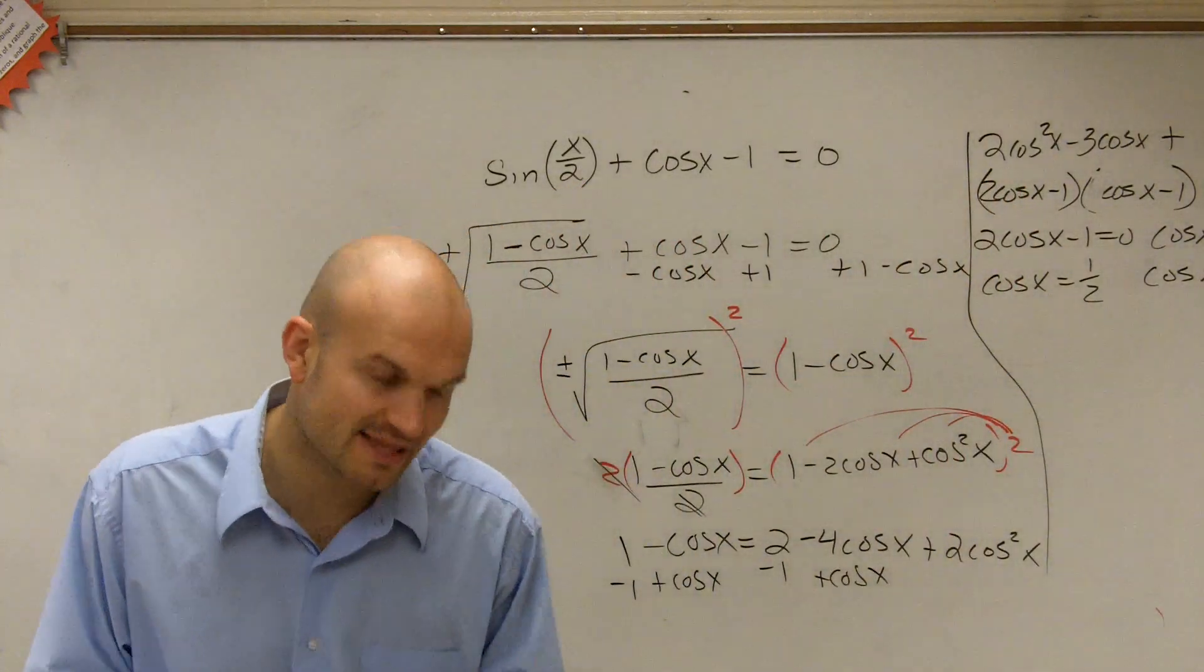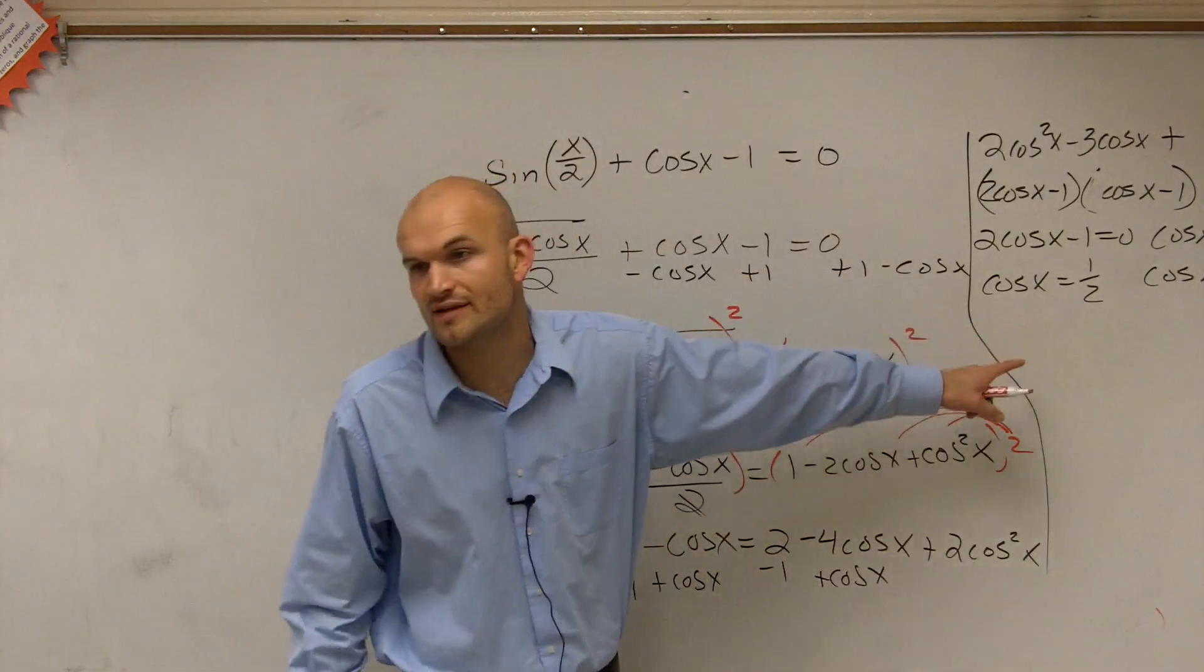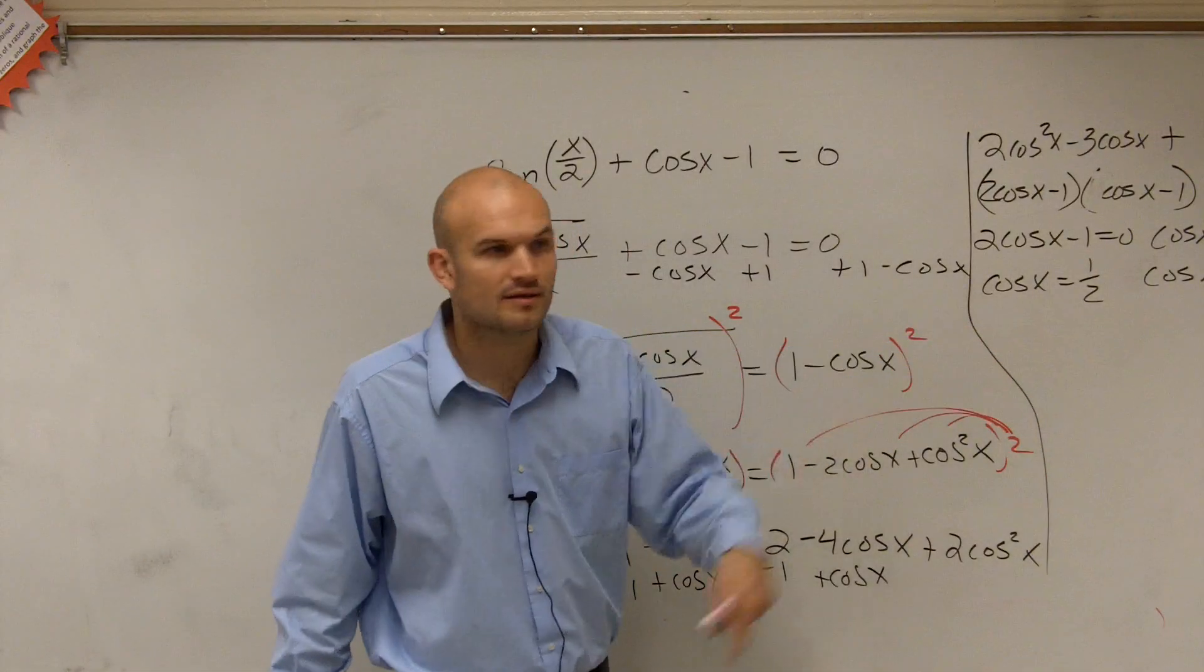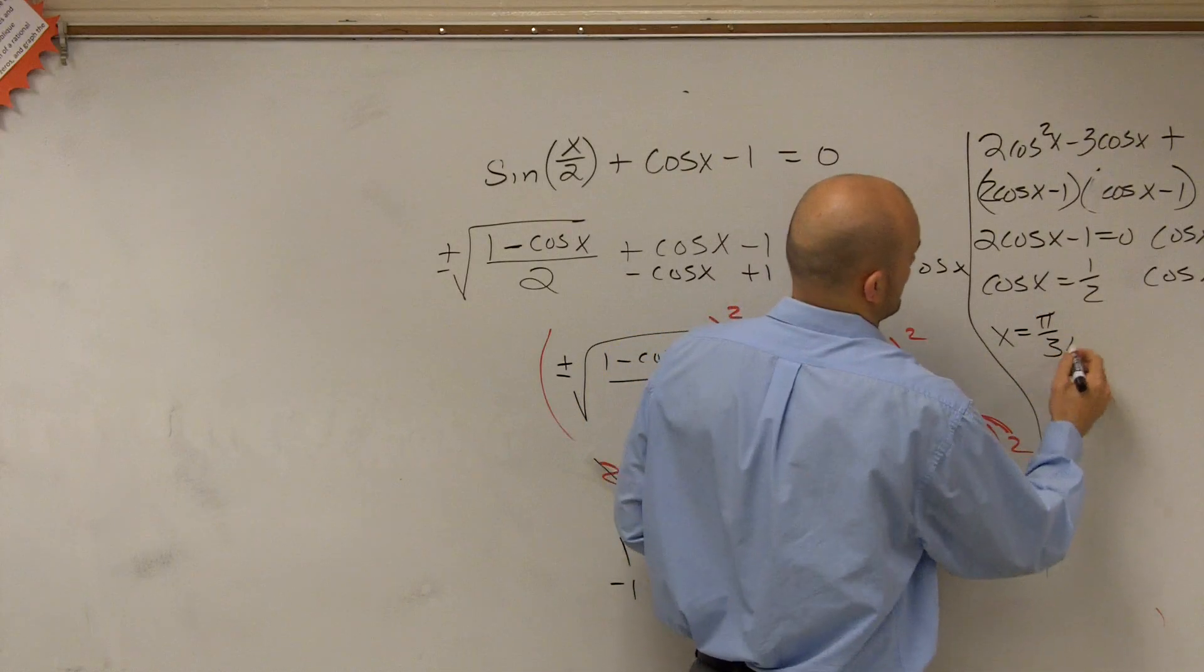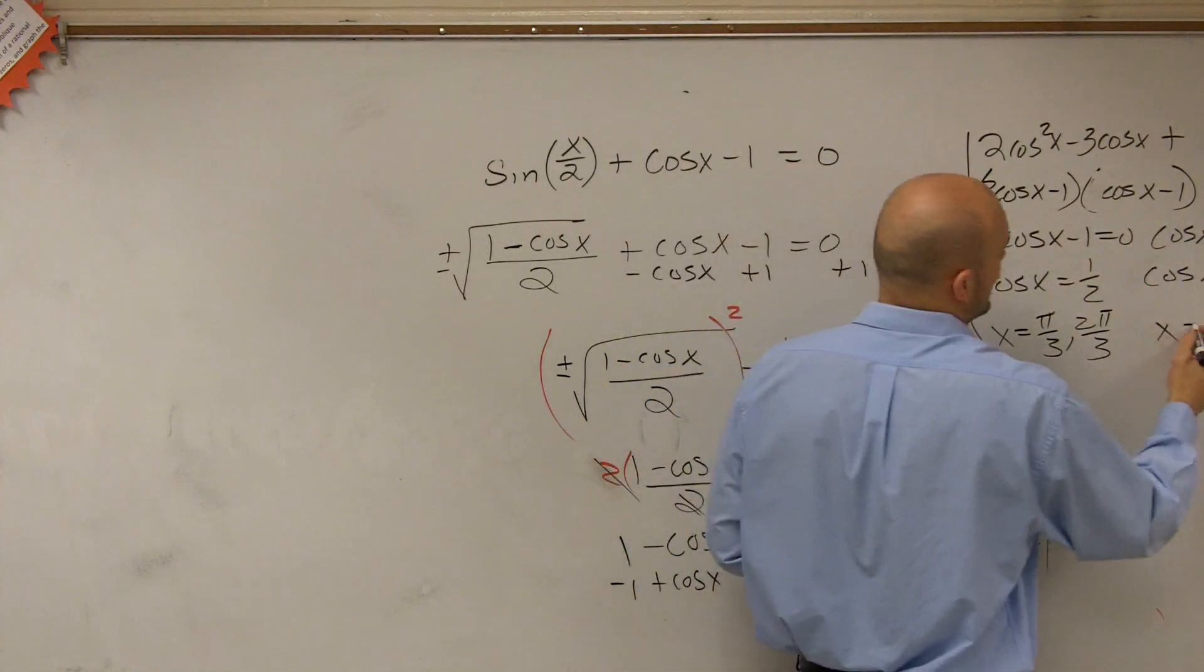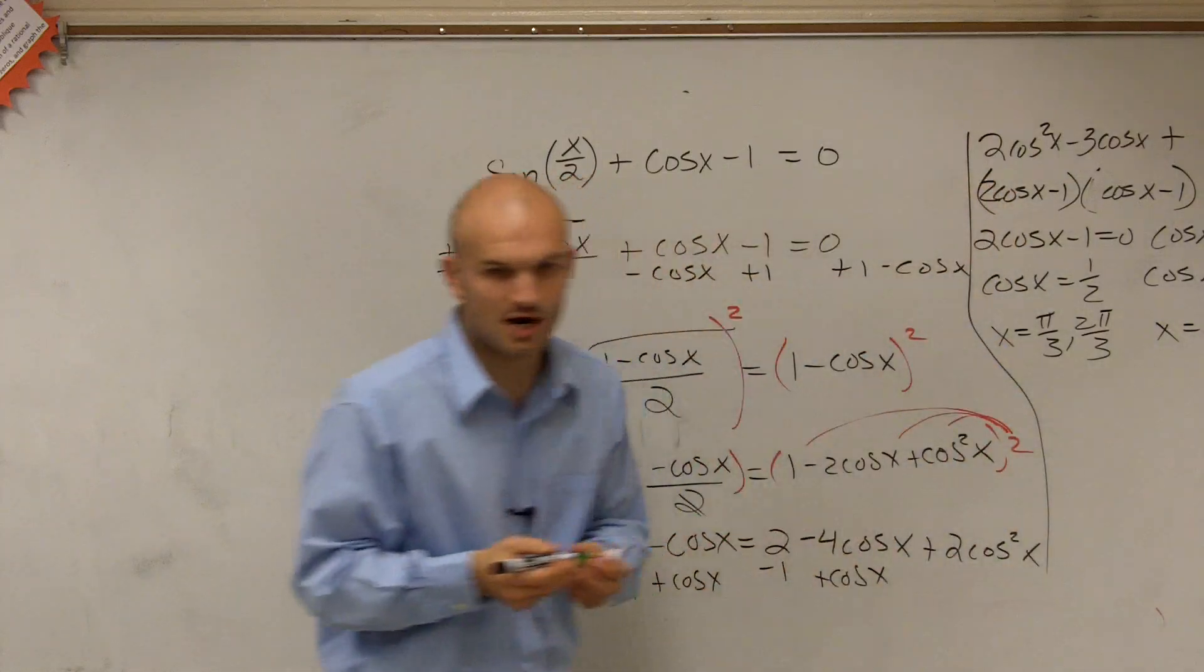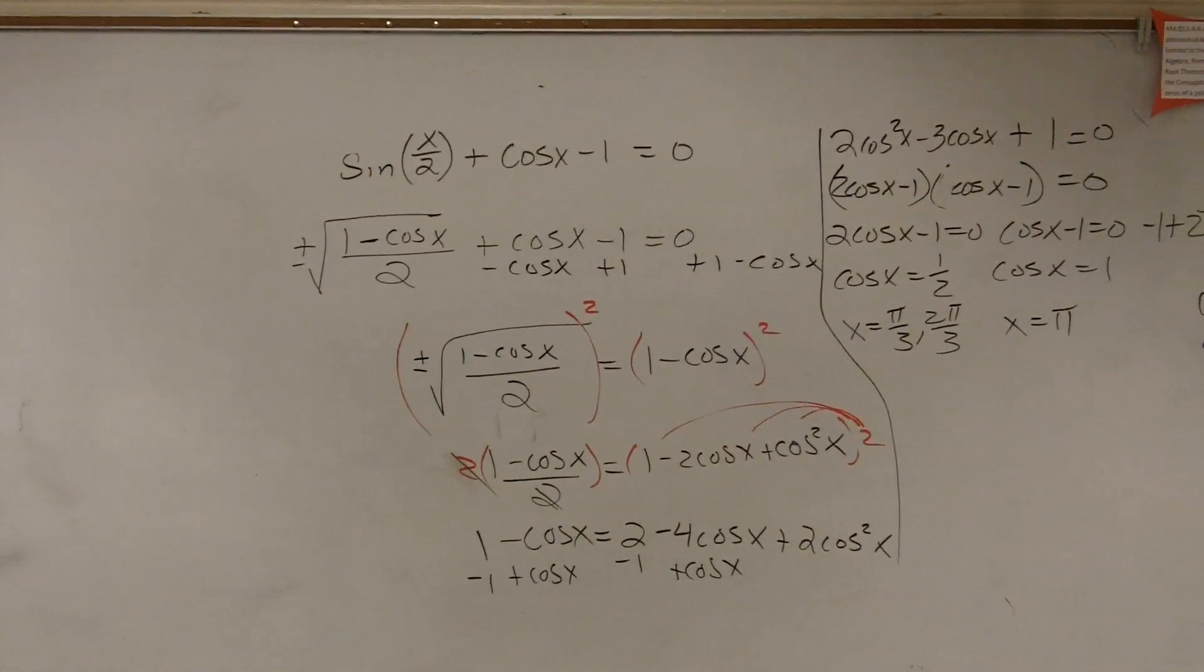Now, for this problem, it does say find the answer on the interval of 0 to 2 pi. So I say, when does cosine of x equal 1 half? That's going to be at pi over 3 and 2 pi over 3. Cosine of x equals 1 at x equals pi. Sorry, I went through that kind of quickly. But obviously, the bell rang, so we've got it done. Right?